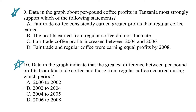Let's go back to question 9. Option A: fair trade coffee consistently earned greater profits than regular coffee earned. That feels supported by the graph — the dotted line is higher, making more money than the unbroken line. So that could be our answer, but let's keep going and see if we can knock out the rest.